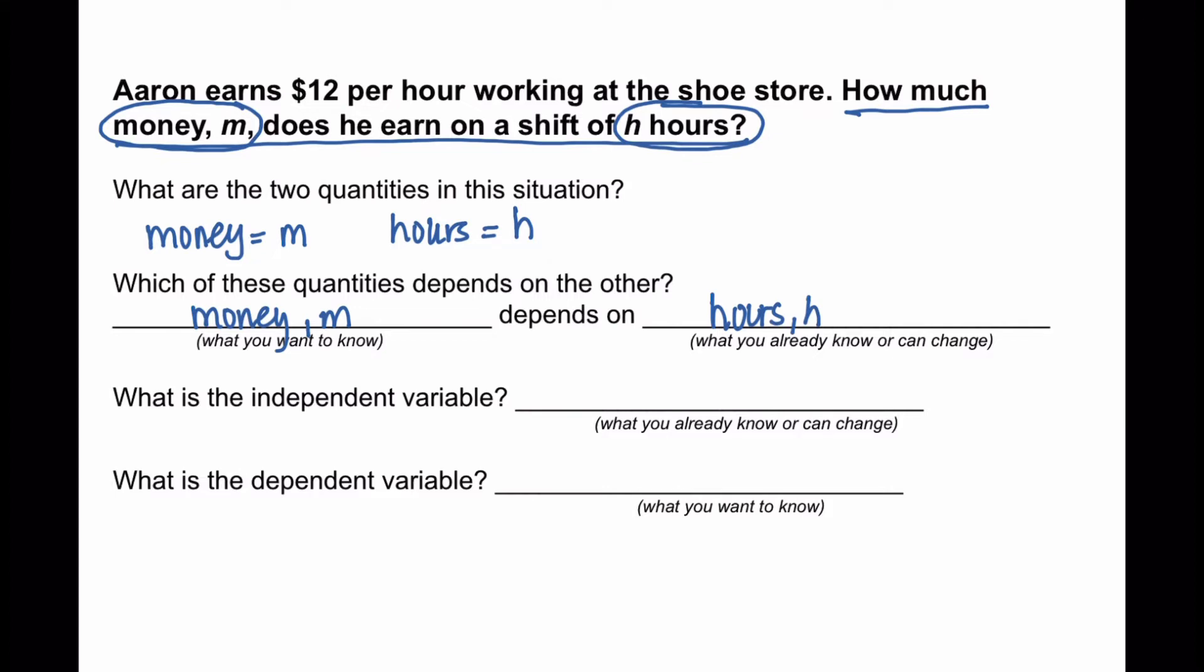So what is your independent variable? Your independent variable is going to be the variable that answers the question what do you already know or what can you change? In this case, it's going to be the hours.